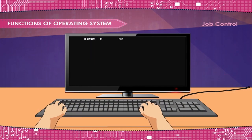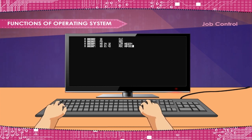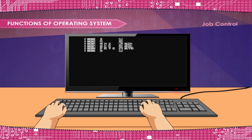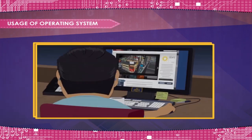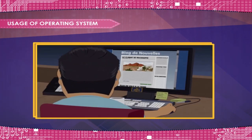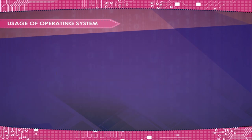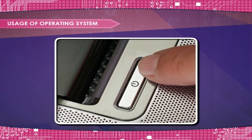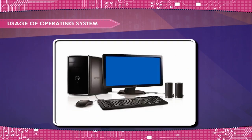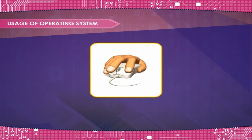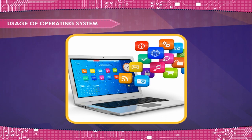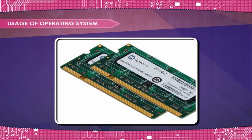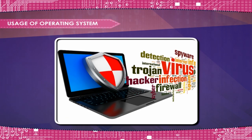Job Control: Using Operating System Job Control Language, or JCL, the user can communicate with the operating system for telling it what to do. Usage of Operating System includes: easy interaction between the user and computer, starting computer operation automatically after power on, loading and scheduling user's programs, controlling input and output, controlling program execution, managing users of main memory, and providing security to user's programs.